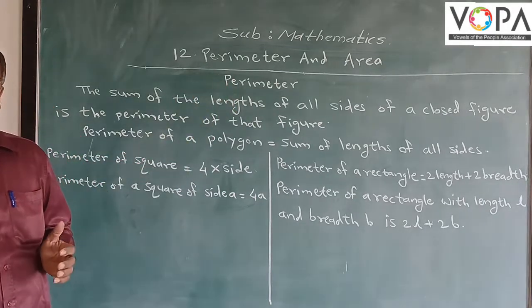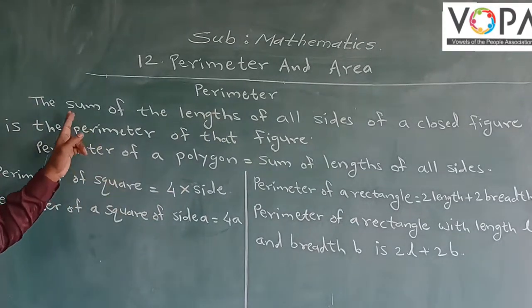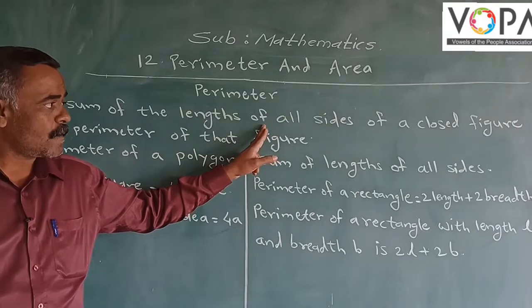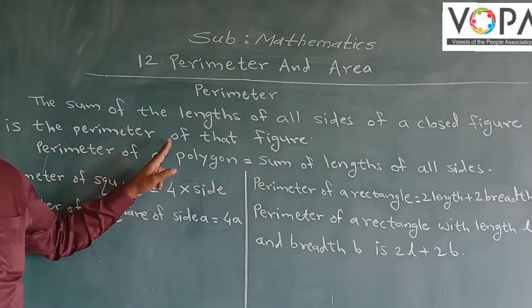In that first we should learn about the perimeter. What is mean by perimeter? The definition is the sum of the length of all sides of a closed figure is the perimeter of that figure.